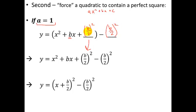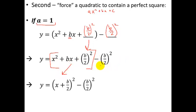Once you've done this, you can group the first three terms together — this is a perfect square — and whatever term is left over at the back just stays as that number. The perfect square part right here is now in vertex form, so you have an expression in vertex form.